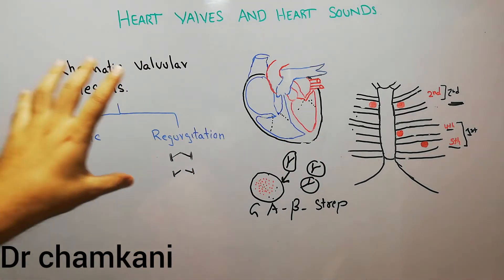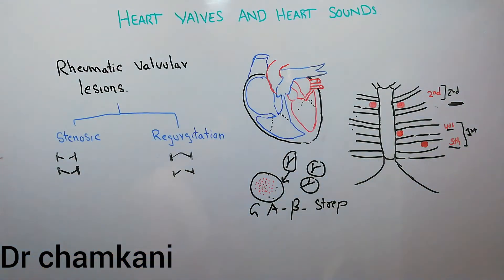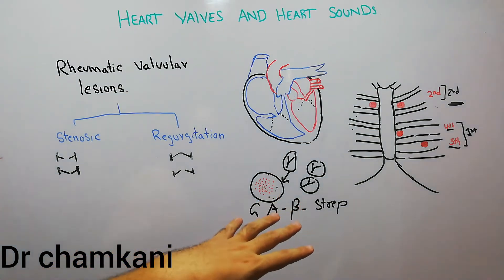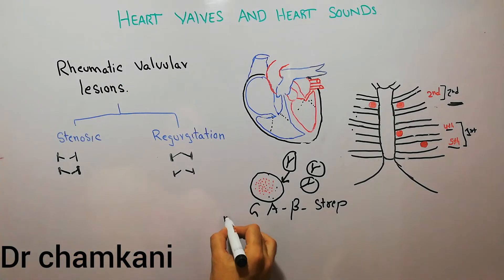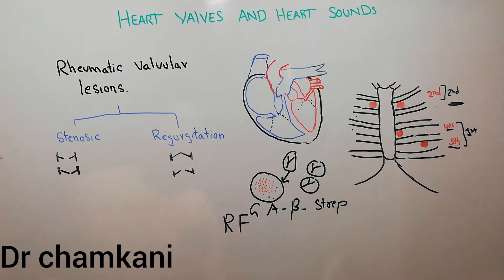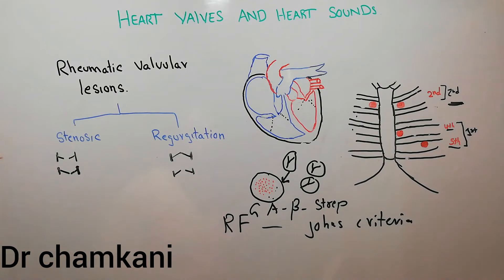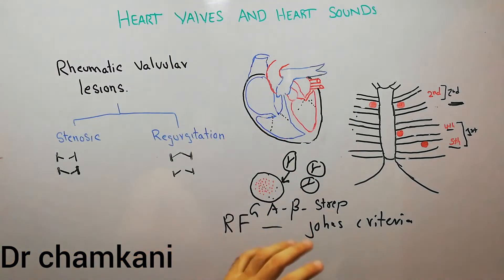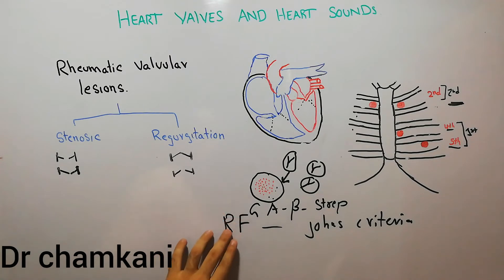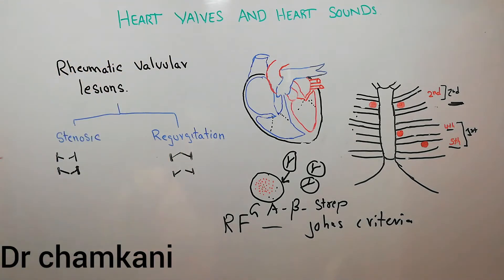The rheumatic fever and these antibodies not only affect the valves — they will also affect some joints and act against some structures in the skin, giving multi-system involvement. To diagnose rheumatic fever, we use the Jones criteria, which has major and minor components. Carditis, or involvement of the heart, is basically a major component of the Jones criteria.